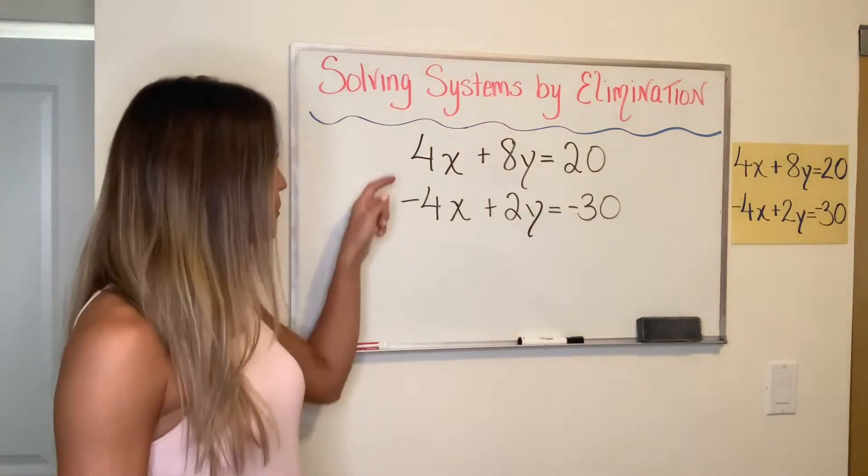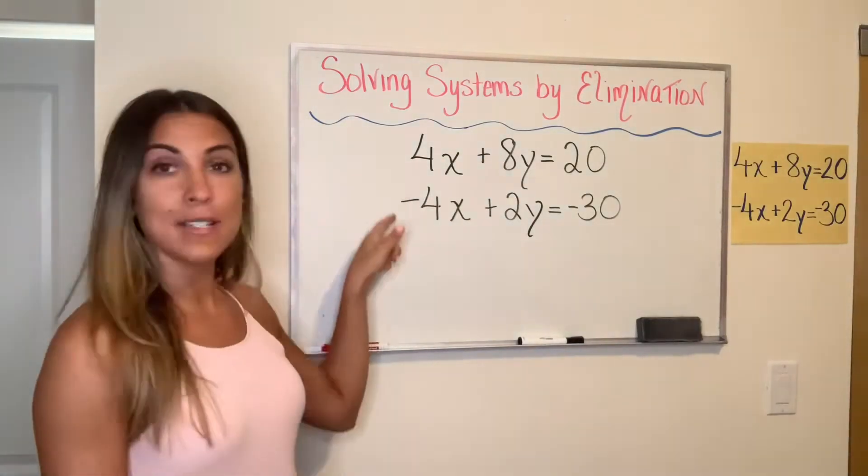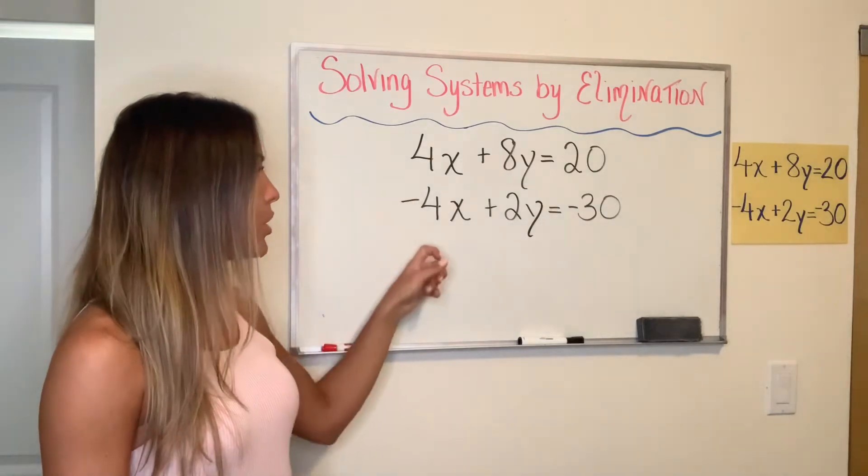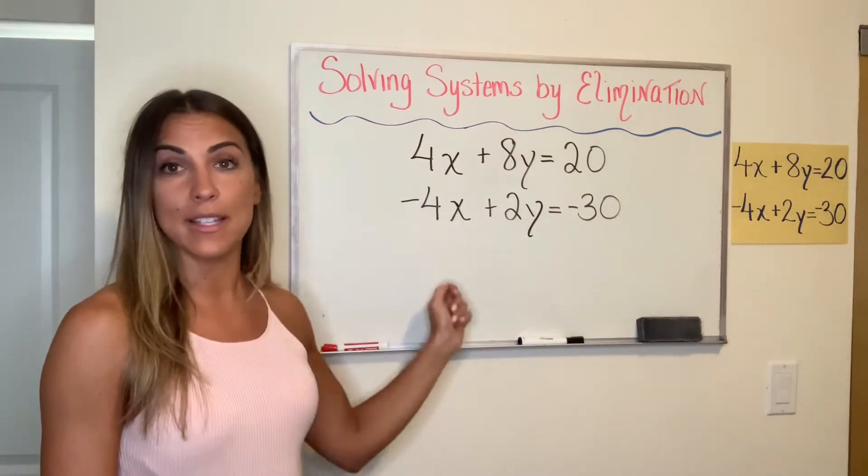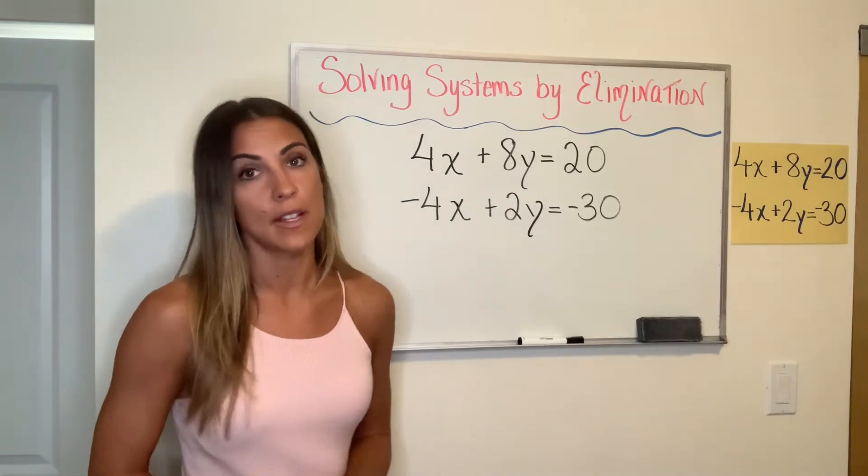When you have a system where the coefficients of either of the variables are opposites of each other, the way they are here. So you'll have a 4 for the x in the top equation and a negative 4 for the x in the bottom. If you see that scenario, that's when it would be much easier to use elimination than substitution.